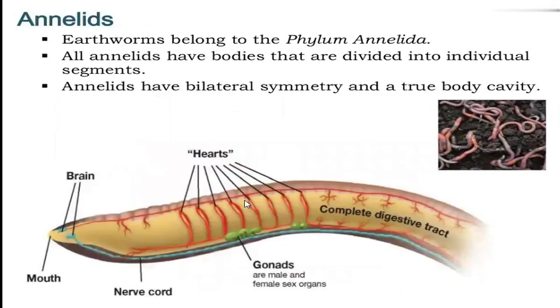Annelida have individual body segmentation — the body is divided into segments. Annelida show bilateral symmetry and have a true body cavity.